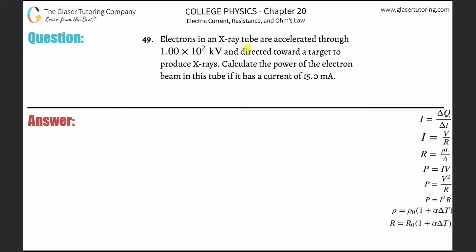Number 49. Electrons in an X-ray tube are accelerated through 1 times 10 to the 2 kilovolts and directed toward a target to produce X-rays. Calculate the power of the electron beam in this tube if it has a current of 15 milliamps.